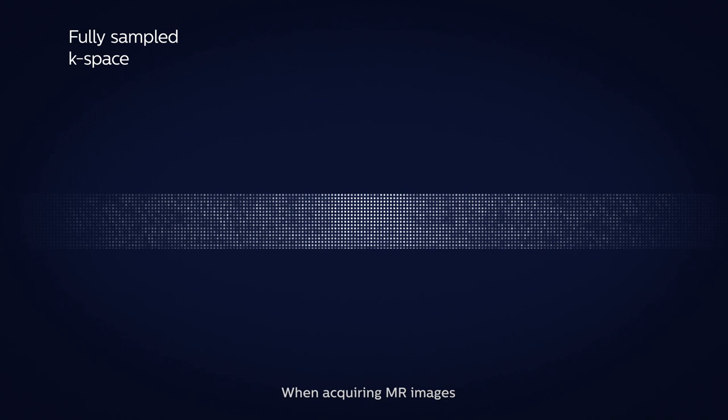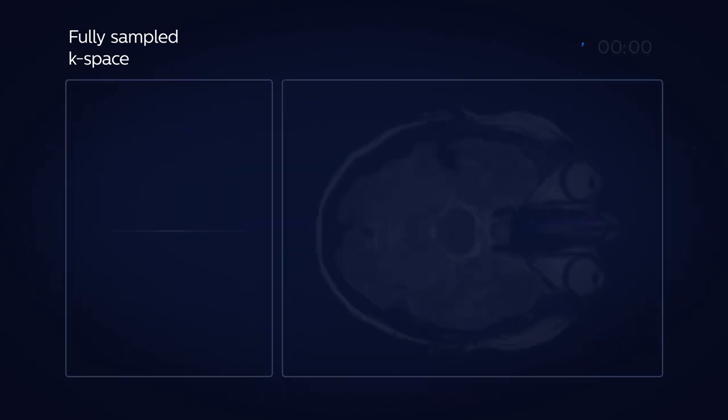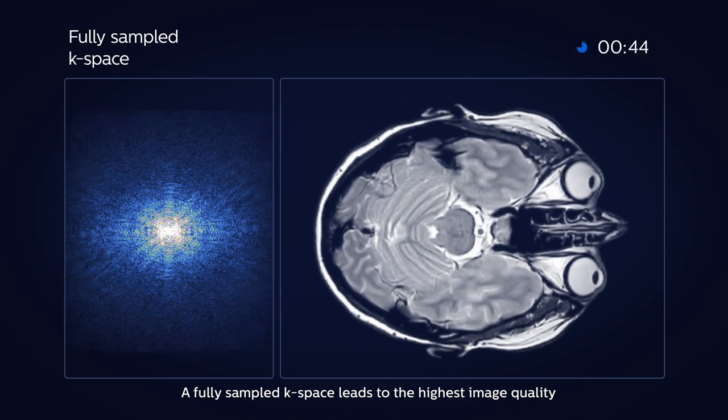When acquiring MR images, raw data is stored in what is called the k-space. A fully sampled k-space leads to the highest image quality.